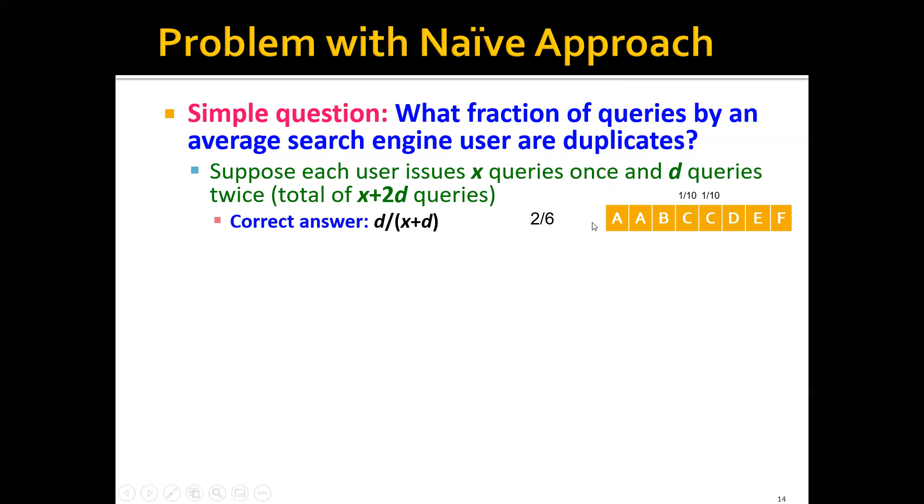More concretely, let's look at this case where the user issued a total of eight queries, and among them it's actually six distinct queries: A, B, C, D, E, and F. Two of the queries are duplicates, A and C. Therefore, the correct answer will be two over six or one over three.